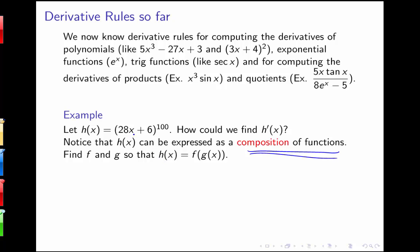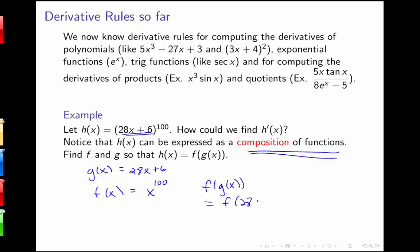So let's try to find f and g so that h of x can be written as f of g of x. Looking at this, I see that my inside function g of x could be 28x plus 6, and that my outside function f of x could be x to the 100. Then, computing f of g of x, I would see that f of 28x plus 6 is equal to 28x plus 6 to the 100th power. So what I'd like is a derivative rule similar to my product rule and quotient rule — a rule that depends on f and g and has to do with their derivatives.